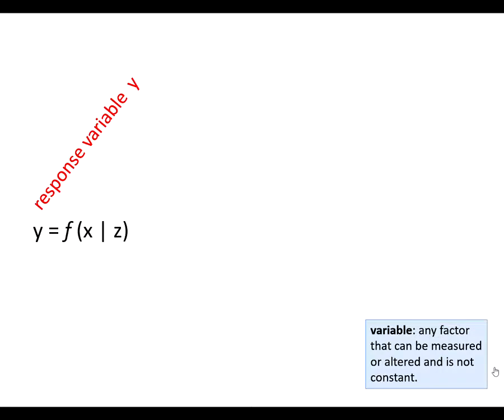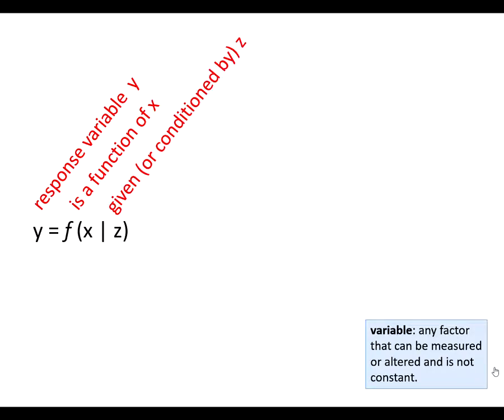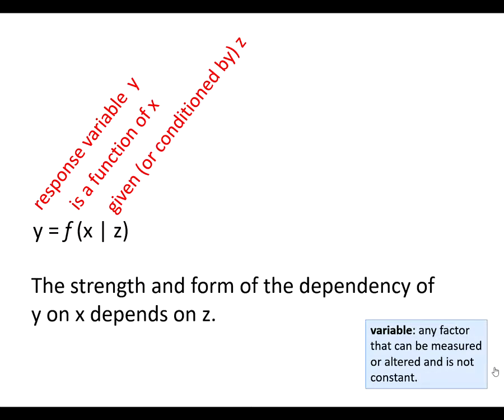If the relationship between two variables is conditional on a third variable, we can write it like this. The response variable Y is a function of another variable X, but that depends somehow on Z. In other words, the strength and form of the dependency of Y on X depends on Z.